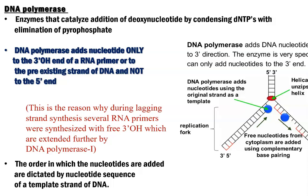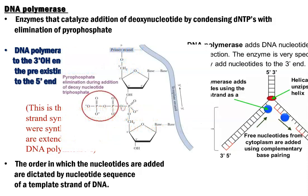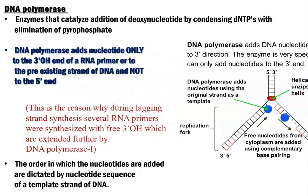This enzyme is called DNA polymerase. It catalyzes the addition of deoxynucleotides by condensing the dNTPs with elimination of pyrophosphate. This enzyme adds a nucleotide only to the 3'-OH end of the RNA primer or to an already pre-existing strand of DNA, and it does not have the ability to add a new nucleotide to the 5'-end.